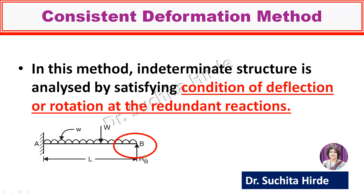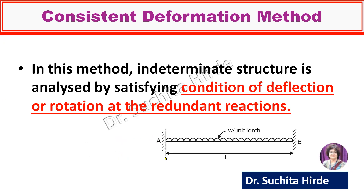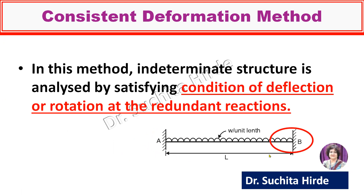But rotation at the simple end is not equal to zero. So in this structure we have three conditions available: theta A equal to zero, delta A equal to zero, and delta B equal to zero. If it is a fixed beam, both the supports are fixed supports. So at A, the conditions are delta A equal to zero and theta A equal to zero. Similarly at support B, delta B equal to zero and theta B equal to zero. If the beam is symmetrically loaded, then slope at mid-span is also equal to zero.